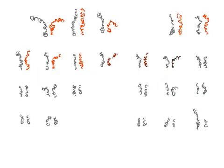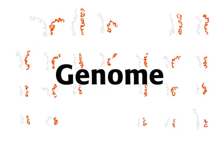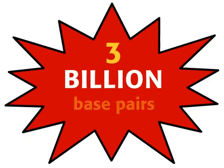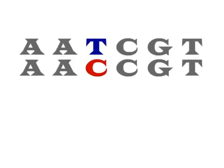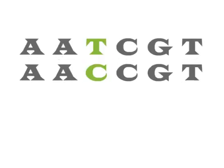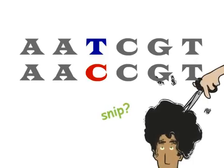An entire set of 23 human chromosomes is called a genome. The human genome is composed of 3 billion base pairs. Variation at a single base pair is called a SNP,